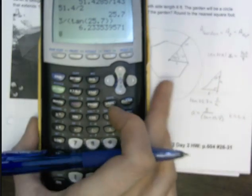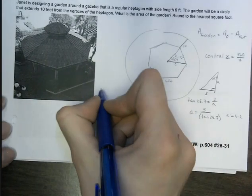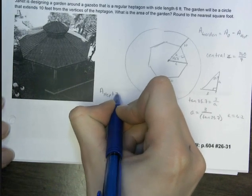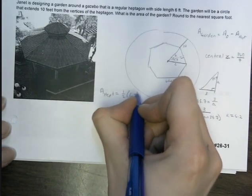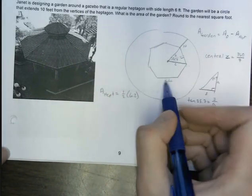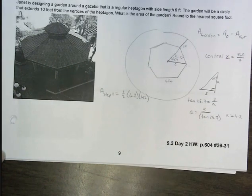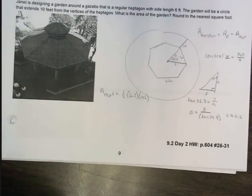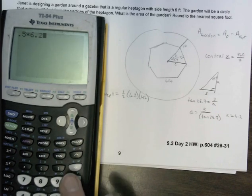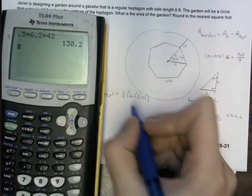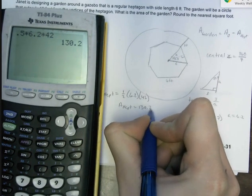So we can go ahead and find the area of the heptagon, because we have everything we need now. So 1 half, the apothem, which is 6.2, and the perimeter, each side was 6, and I had 7 sides, so 6 times 7 is 42 for the perimeter. So, I've got .5 times 6.2 times 42. So we've got the area of the heptagon is about 130.2 square feet.